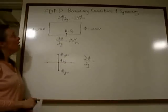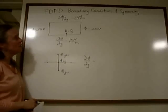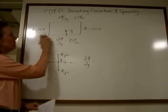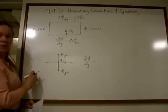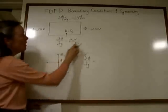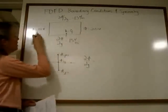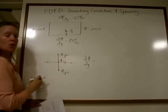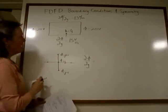Today we'd like to talk about the finite difference frequency domain method, boundary conditions, and symmetry conditions. The problem I want to solve is a rectangular duct — we've done rectangular ducts before. This time I'm going to have a potential of 20 volts on the right, 20 volts on the left, and the top and bottom are going to have slightly different boundary conditions than before.